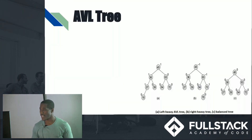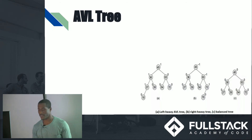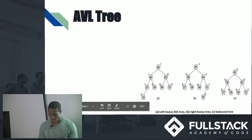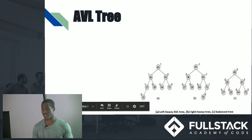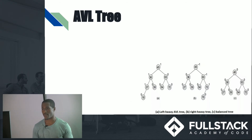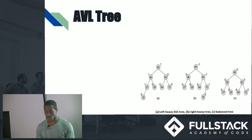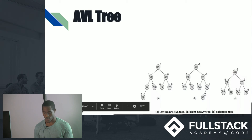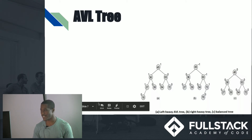Next up is the AVL tree, which is named after its creators. This is actually the first self-balancing binary search tree, created back in 1962 by Georgy Adelson-Velsky and Evgeni Landis.